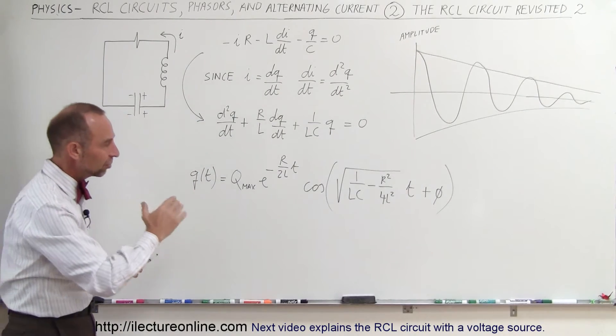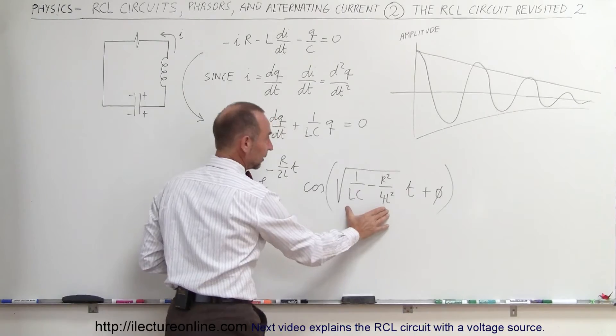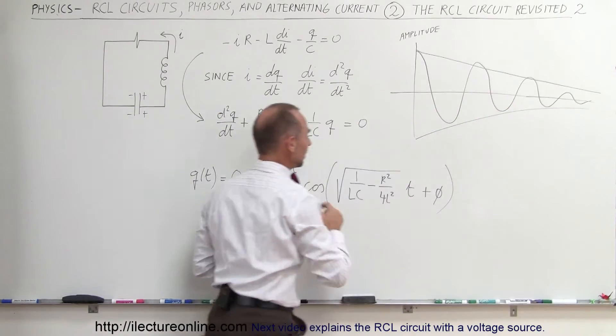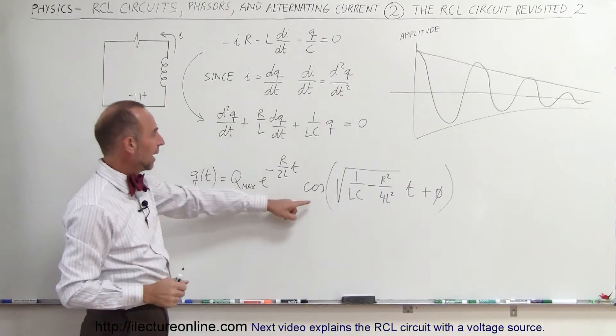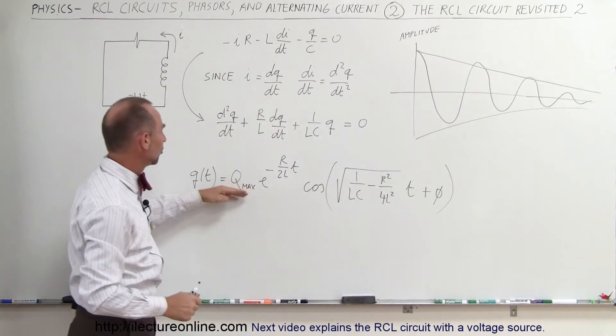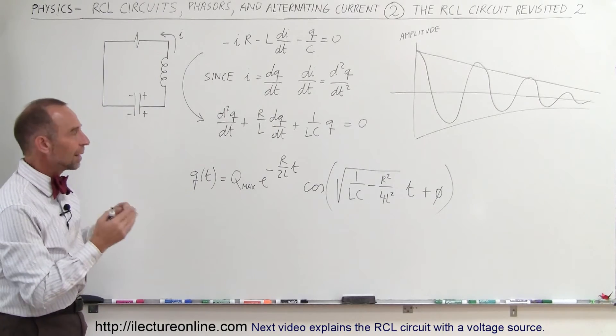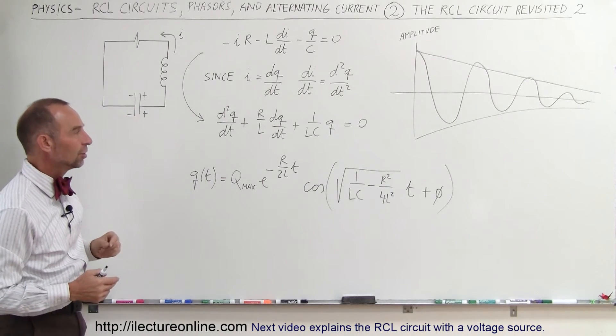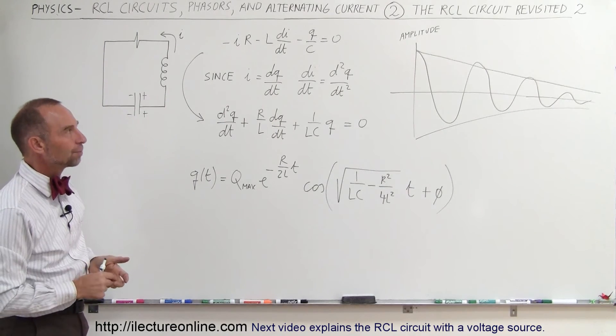And so that would be the equation describing the oscillations. The frequency right here is the frequency of oscillations of the current flowing back and forth, and this would be the exponential decay function that diminishes the amplitude of the oscillations, the amplitude of the amount of charge on the capacitor as time goes on.